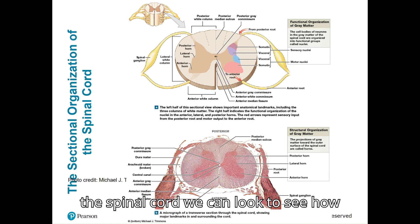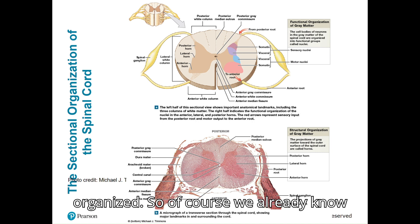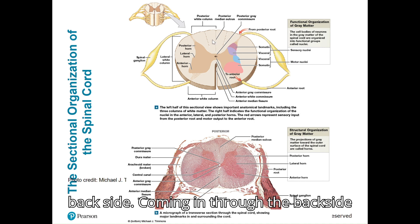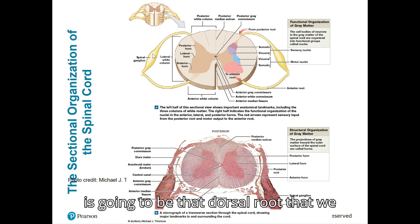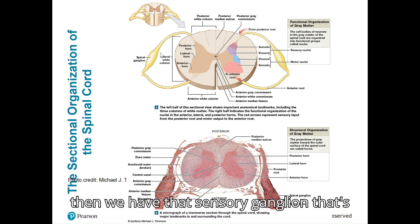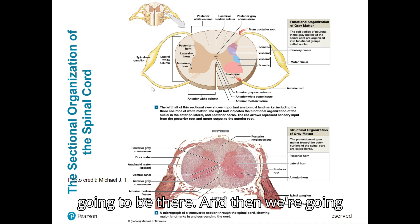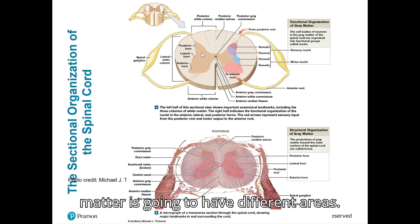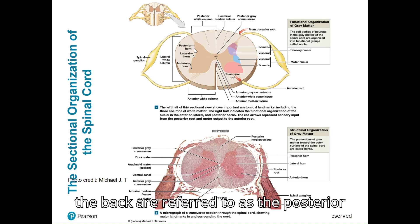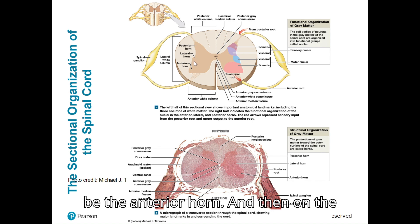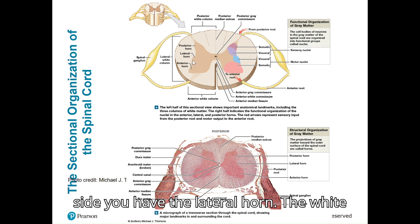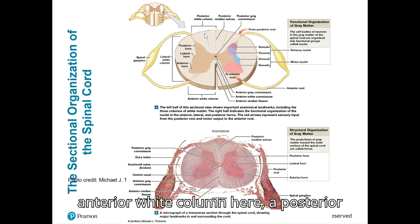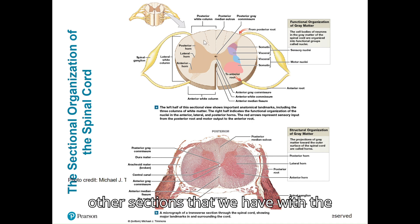Looking closely at a cross-section of the spinal cord, we can see how the different parts are organized. We have the anterior median fissure in the front and the posterior median sulcus in the back. Coming in through the back is the dorsal — posterior — root, with the sensory ganglion there, and then the anterior root with little rootlets. Our gray matter has different areas: the projections coming out on the back are the posterior horn, the ones in the front are the anterior horn, and on the side you have the lateral horn. The white matter also has different sections: a lateral white column, an anterior white column, and a posterior white column.